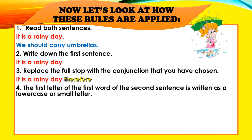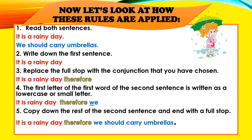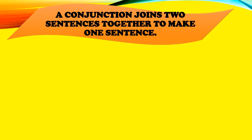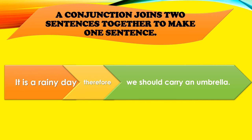The first letter of the first word of the second sentence is written as a lowercase or small letter. Copy down the rest of the second sentence and end with a full stop: "It is a rainy day, therefore we should carry umbrellas." As you can see, boys and girls, we have taken two sentences and used a conjunction to make it into one sentence. A conjunction joins two sentences together to make one sentence.